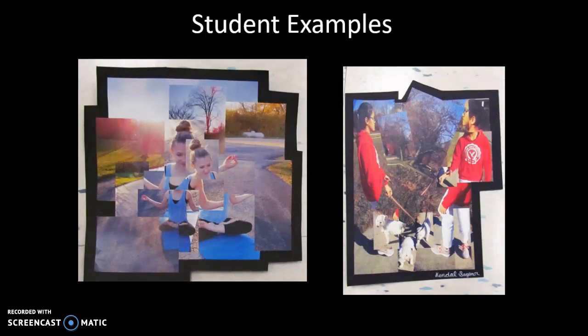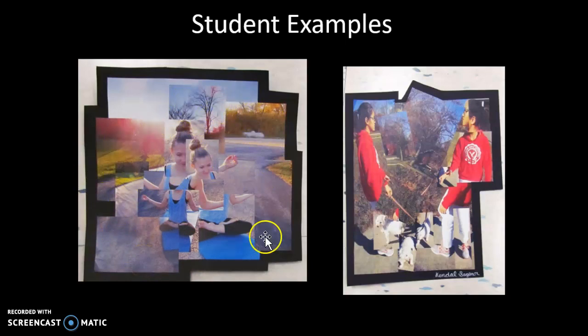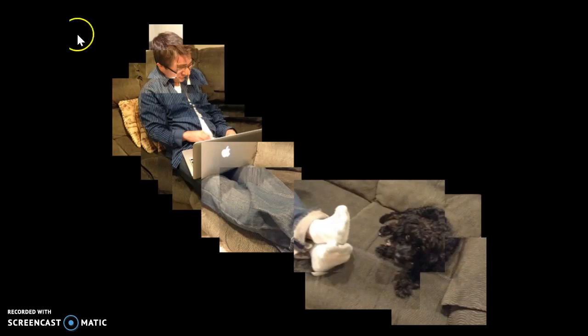I have a couple of student examples to show you from last semester. All three of these people tried to focus more on the person within the space. You can see this one — they're outside doing a yoga pose. It's neat to see some of the background with the trees and that irregular edge. These two people actually took their pictures and then printed them out here in school and assembled them in class. Here's another one. This one they did in Microsoft Word, trying to create a scene in a space, done all digitally. You can see the variations where they're overlapping, and that nice irregular edge.